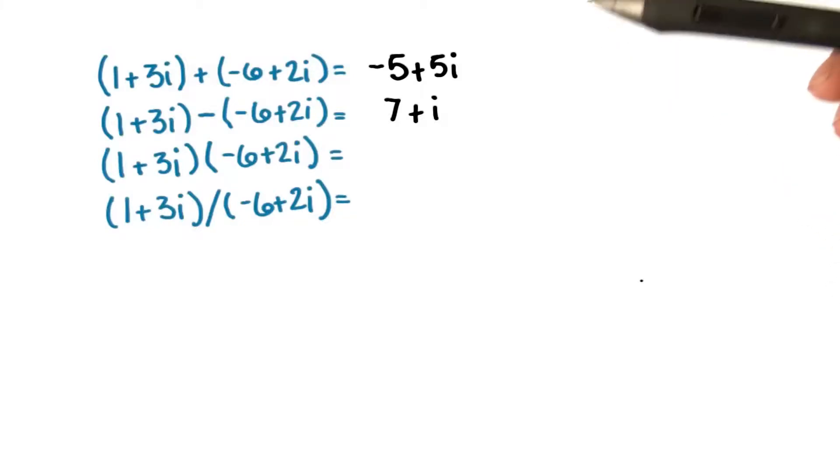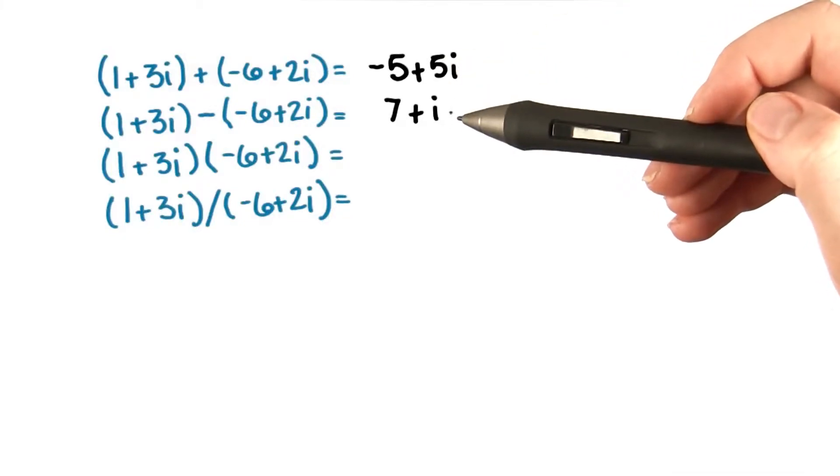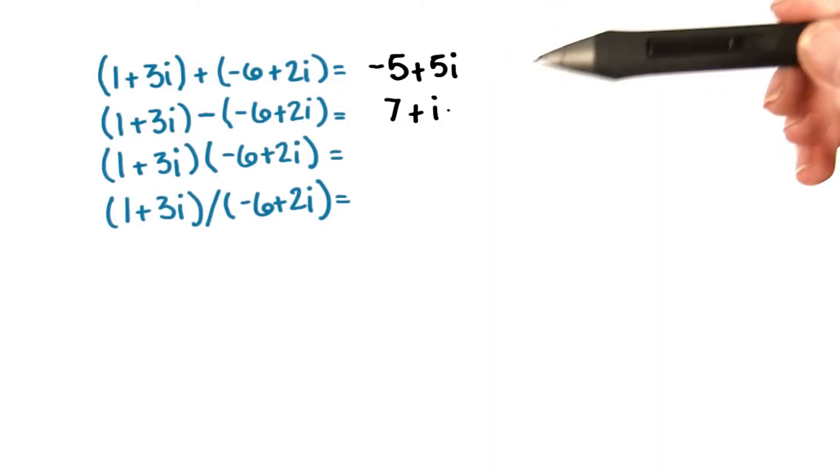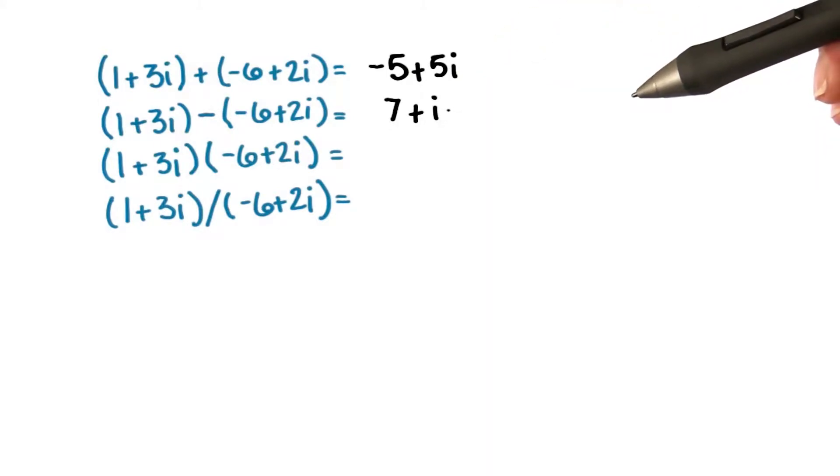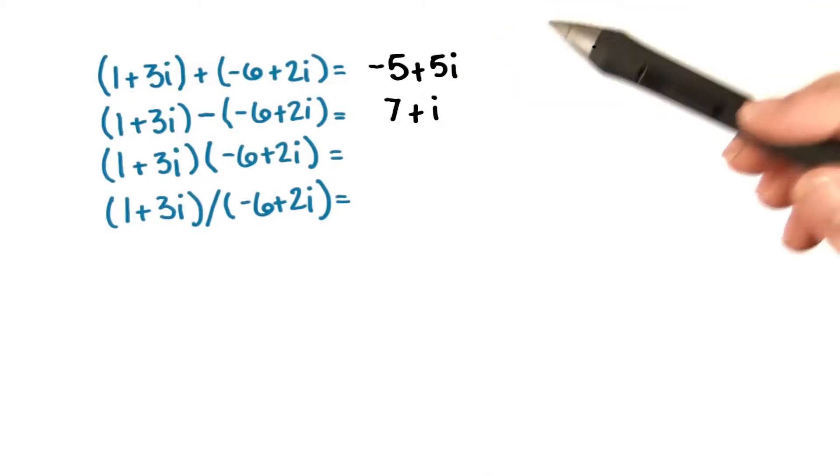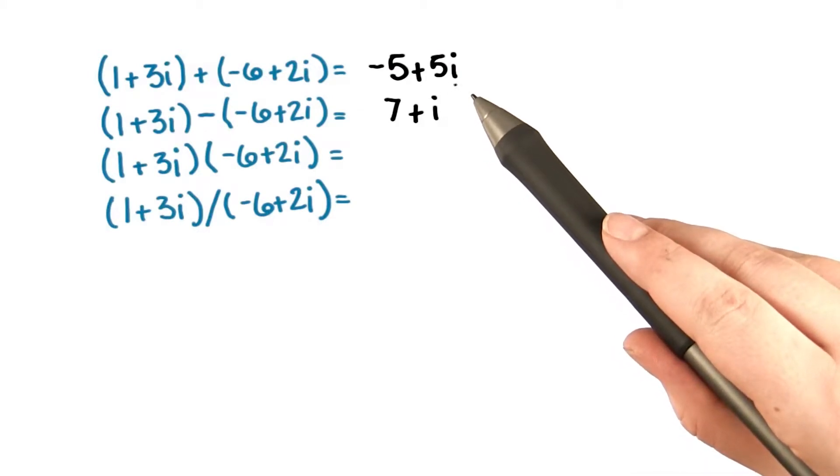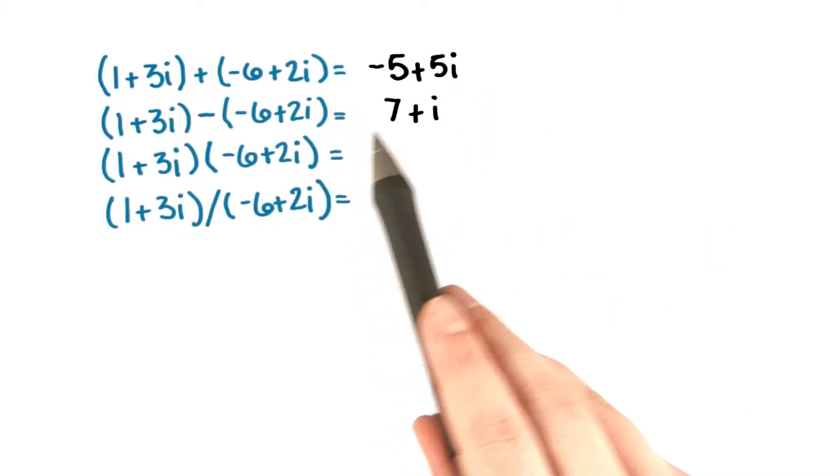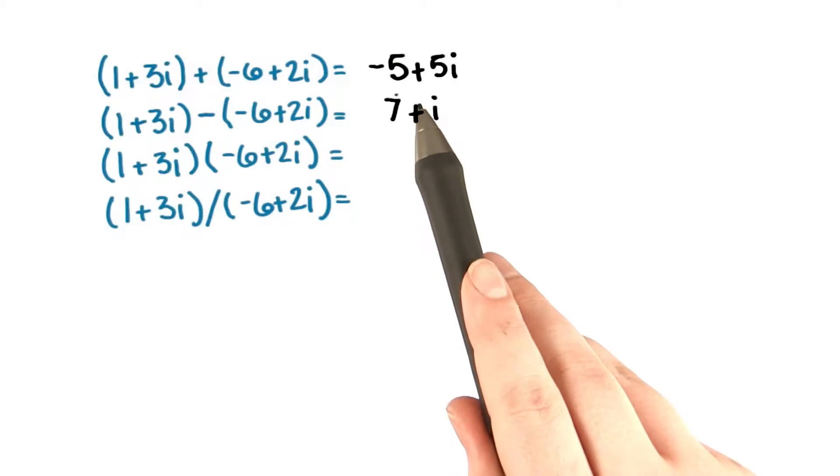Remember that when we add and subtract complex numbers, the imaginary parts are like terms, and the real parts are like terms. So we end up with 1 plus 3i plus the quantity negative 6 plus 2i equals negative 5 plus 5i.